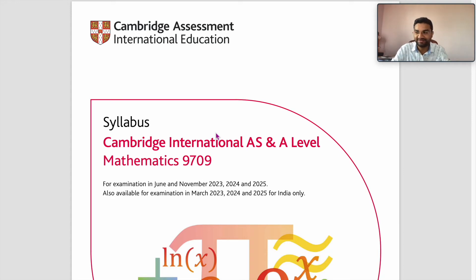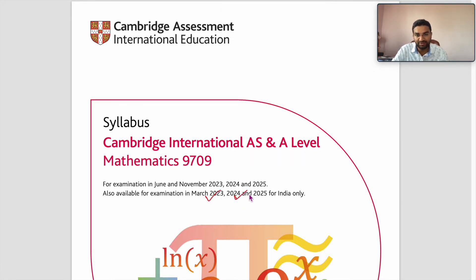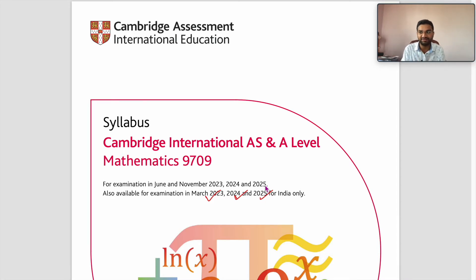Hi, hello, welcome to Vision Classes. Today we will go through the revised syllabus of AS and A Level Mathematics. This is the syllabus for 2023, 2024, and 2025. Nothing has changed as such — they have kept the syllabus as it is — but we will discuss the A Level syllabus specifically: marking distribution, and what different subjects you can choose for AS and A Level.